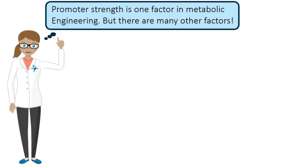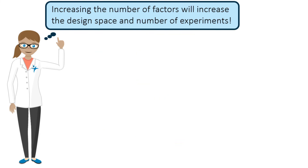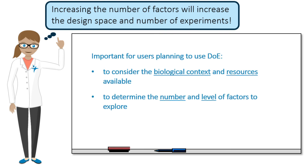This example simply focuses on promoter strength as a factor to change for the expression of a biomolecule. However, in the large scheme of metabolic engineering, there are other factors that could be explored which may impact production output, such as plasmid vector copy number, gene topology, ribosome binding sites, the strain of organism, and growth media, among many others. Increasing the number of factors to explore will undoubtedly increase the size of the design space and the number of experiments needed to gain insight. It is therefore important for users planning to use DOE to consider the biological context and resources available to determine the number and level of factors to explore.